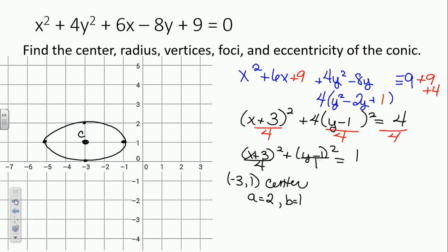We've got our basic shape. The vertices are negative 1, 1 and negative 5, 1.